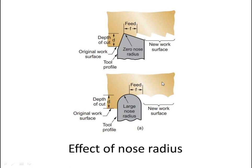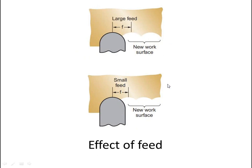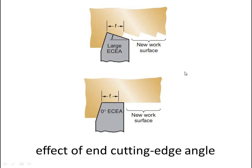Looking at the diagram: this shows the effect of nose radius — here is zero nose radius and the resulting new surface, and here is large nose radius and its effect on the new surface. This also shows the effect of feed — large feed and the effect of large feed, versus small feed and the effect of small feed. Finally, this shows the effect of end cutting edge angle — large angle versus zero angle, and the resulting surface for each.